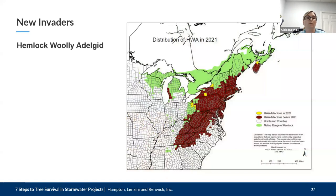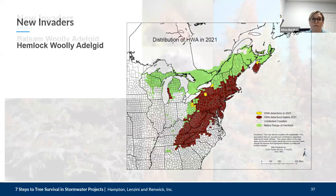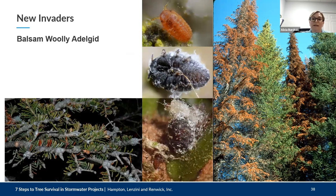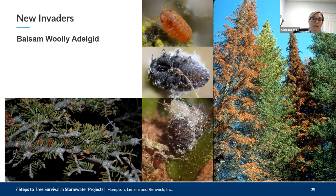The balsam woolly adelgid is a sap-feeding insect that attacks true fir trees, including balsam fir and Fraser fir. It's on the watch list for Michigan and could be introduced via nursery stocks, firewood, logs, or vehicles — and once here, wind, birds, and animals can carry it for miles. It weakens trees, causes twig glouting, kills branches, and over several years causes the trees to die. It was introduced to southeastern Canada from Europe. In Great Smoky Mountains National Park, 95% of Fraser firs have been killed by this pest. Look for white waxy material in twigs and branches.